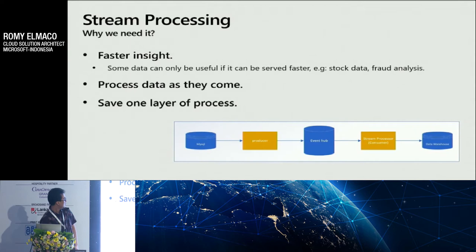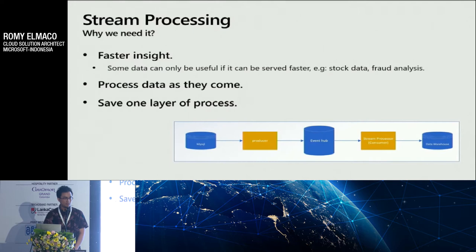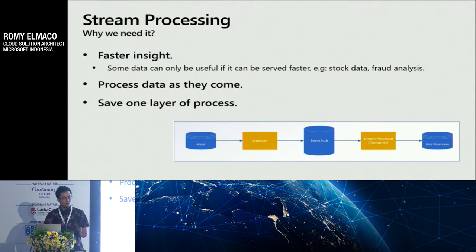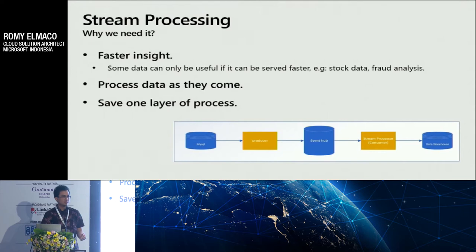So, stream processing — what is different? Why do we need it? Just for faster insight. There's some data that can only be useful if it can be served faster. For example, stock data — it will be useless if we can only read it one hour or one day later, since the batch processing ETL usually runs every one hour or one day. But for faster insight, like stock data, we can see faster movements in the market and take actions manually or automatically. We are also doing fraud analysis — if we can detect it earlier, we can prevent more loss.